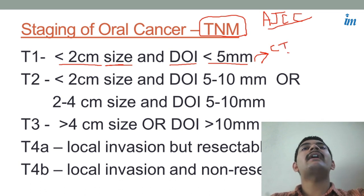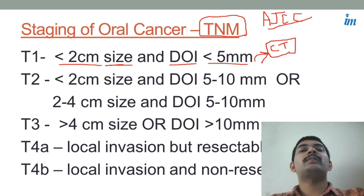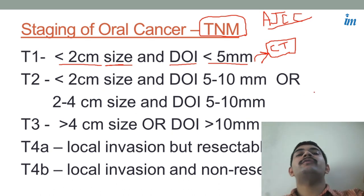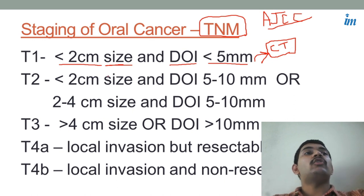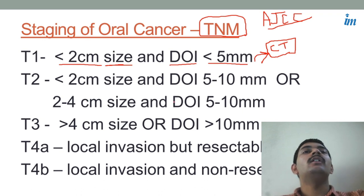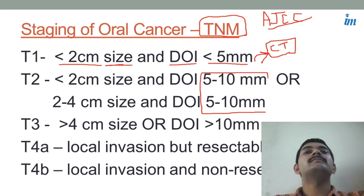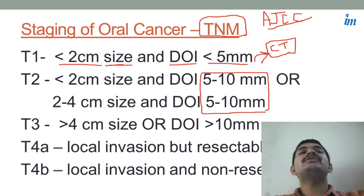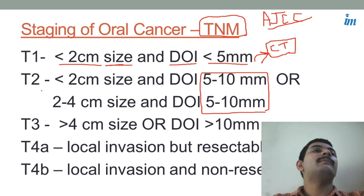Is there a role of MRI? That depends upon the case and the patient. If you suspect involvement of soft tissue, bone, nerves, and blood vessels, then MRI will play a role as well. In T1 you have less than two centimeter size and depth of invasion less than five mm. In T2, the depth of invasion is going to be five to ten mm — so even if your size changes, if the depth of invasion is between five to ten mm, it will always remain stage T2.